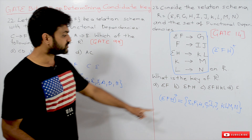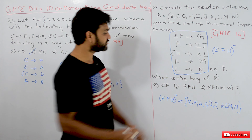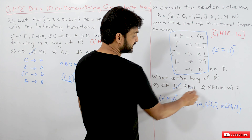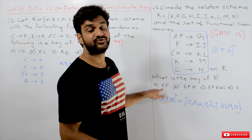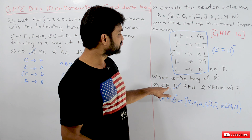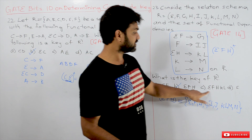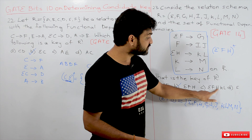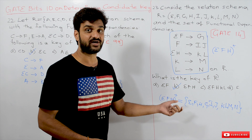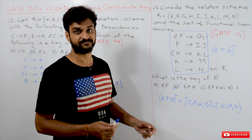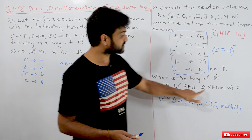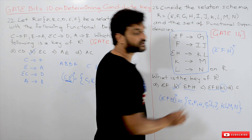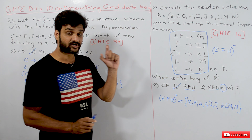We got all the attributes, so the candidate key is {E, F, H}. You might get confused because finding the closure of a subset like {E, F} alone won't give all attributes. Anything added to the candidate key becomes a super key. The correct option is {E, F, H} — that logic is very important to understand.